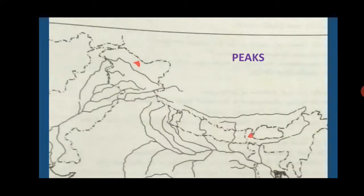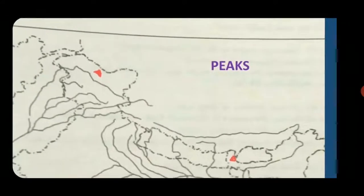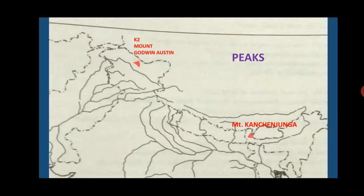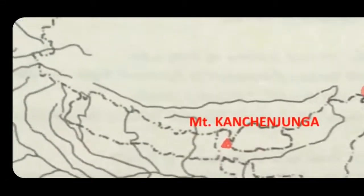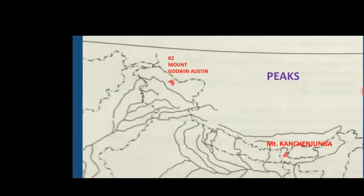Next are peaks. There are two important peaks in your course which you have to mark. First is K2, also called Mount Godwin-Austen — this is the highest peak of India. The second is Mount Kanchenjunga, which is on the border of Sikkim and Nepal. K2 is in the northern part on the Karakoram range.